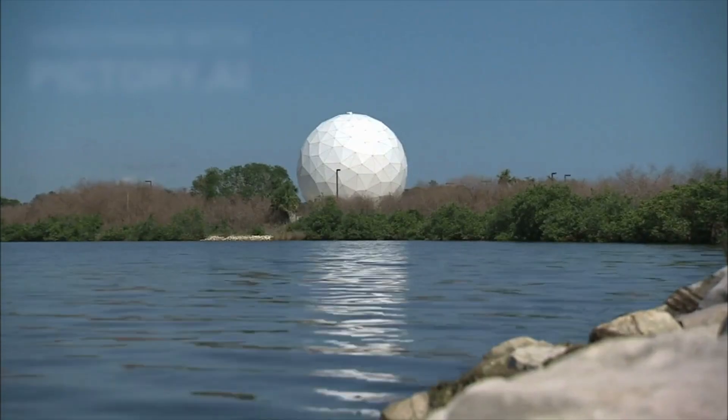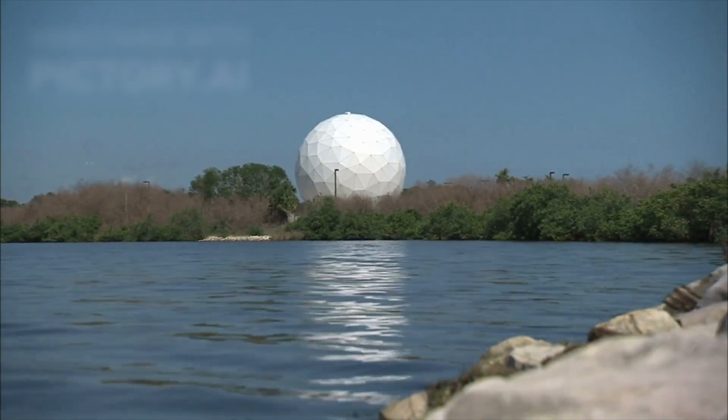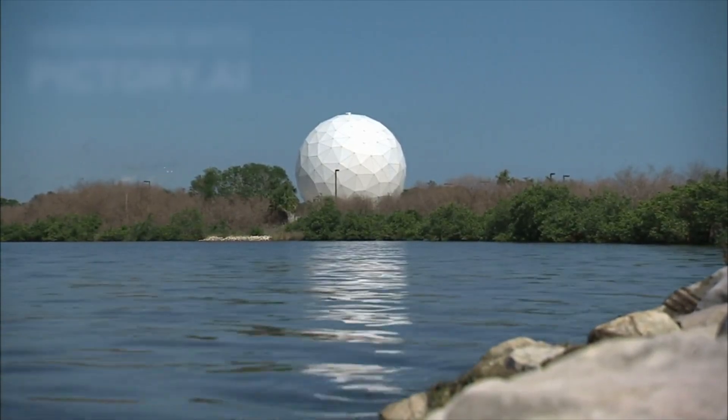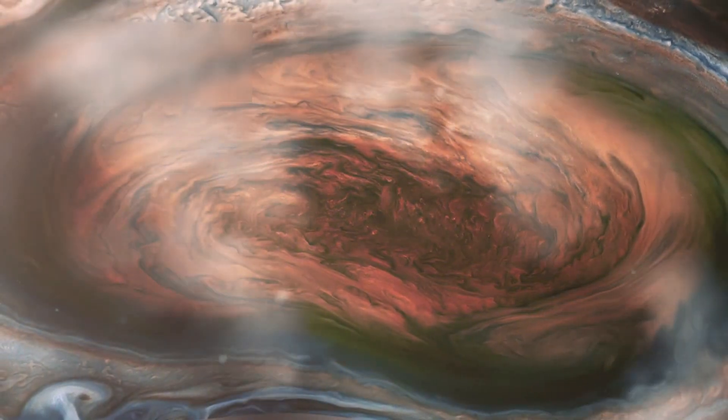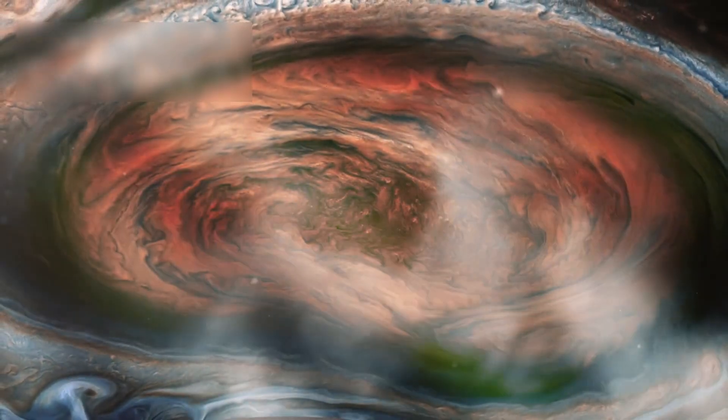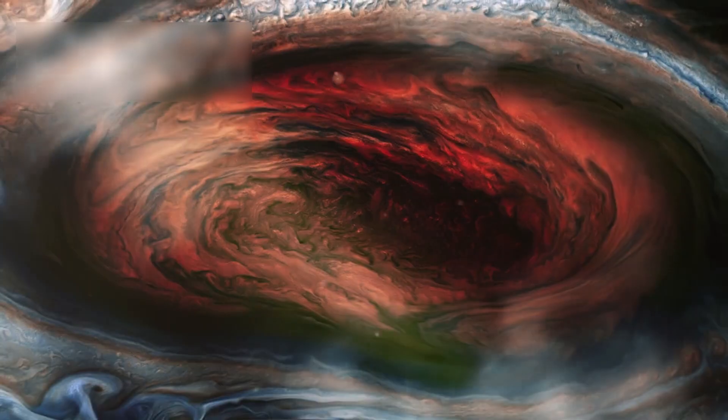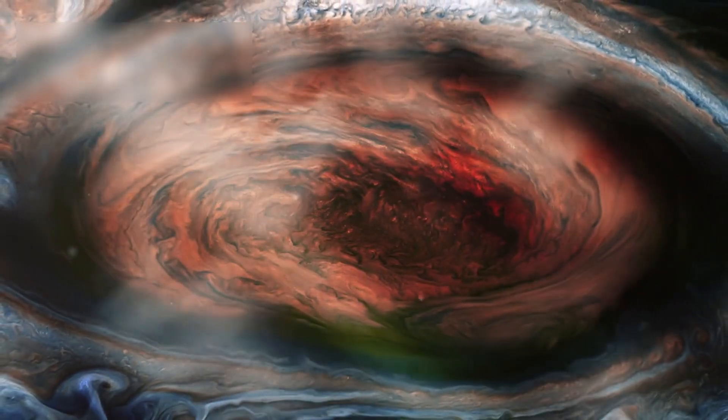In the early 1980s, Voyager 1 astonished the world with breathtaking imagery. It revealed the swirling storms of Jupiter's atmosphere, including the Great Red Spot, a storm so immense that three Earths could fit inside it.